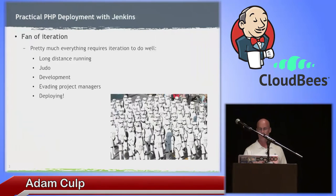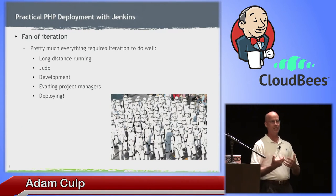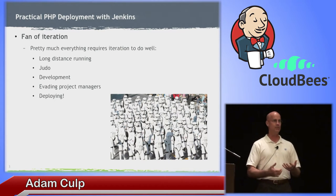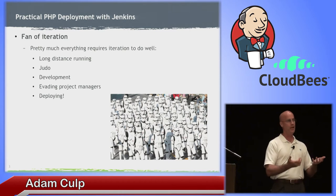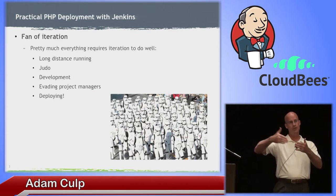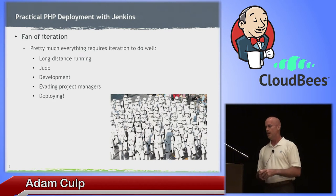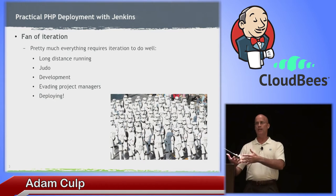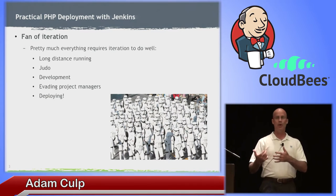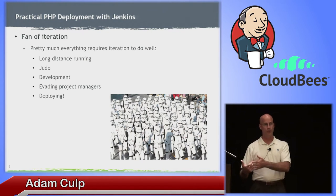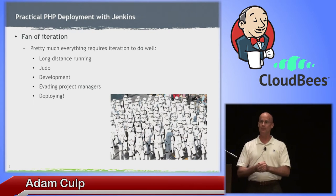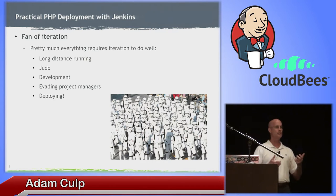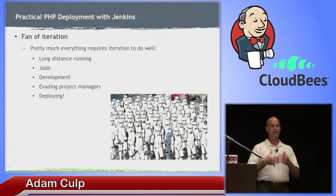I'm also a black belt judo instructor. One of the reasons I bring these things up is because most of the things that I do are iterative, whether it's refactoring or judo. Martial arts is a lifelong study. I didn't jump off the couch and start running 100 miles. It's an iterative process. We get better at it over time. It's much the same way with our activities as developers, whether it's writing code, evading project managers, or of course deployment. We deploy iteratively, and hopefully we're using Jenkins or something along that line to automate that process.